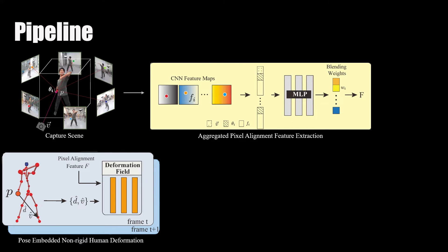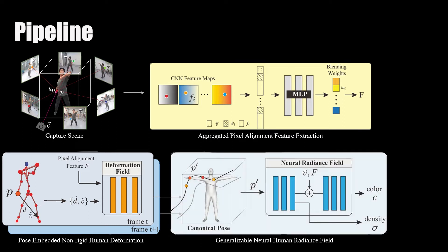Then we utilize SMPL model estimated from multi-view video to perform traditional inverse linear blending skinning, combining with a non-rigid displacement which is generated from our pose-embedded deformation field, so as to deform the sample point to the canonical pose. We use the deformed sample point and aggregated feature to query color and density from our Generalizable Neural Human Radiance Field which is used to do rendering loss.